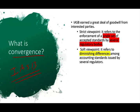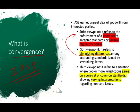Another viewpoint is a softer viewpoint — it refers to diminishing differences, kind of more than harmonization, but diminishing differences among accounting standards issued by several regulatory bodies. So it's more than harmonization but doesn't take the strict viewpoint. The third point of view refers to a situation where two or more jurisdictions agree on a core set of common standards, allowing variant interpretation regarding non-core issues. We agree on the core standards, and for minor issues, it's up to each jurisdiction to deal with them.